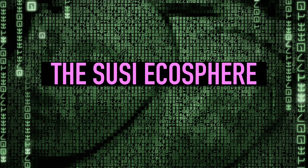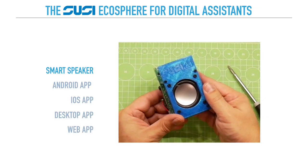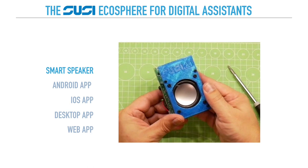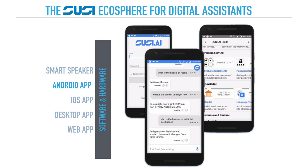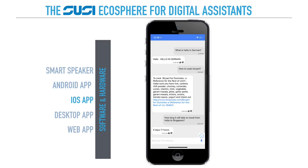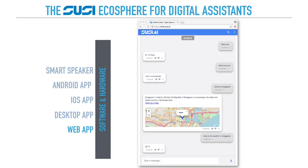The SUSI ecosystem is the set of all the applications we have within all the SUSI functionalities. So there is for example the smart speaker that we produced, but we also have Android applications, iOS applications, a desktop chat application and a web application where you can do all the SUSI functions that you can do by voice, you can also do by chat.